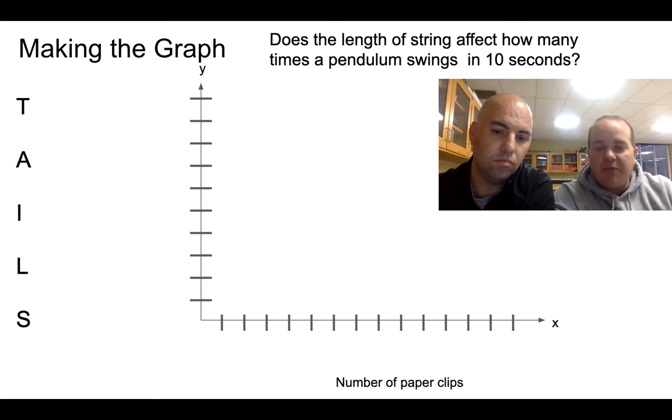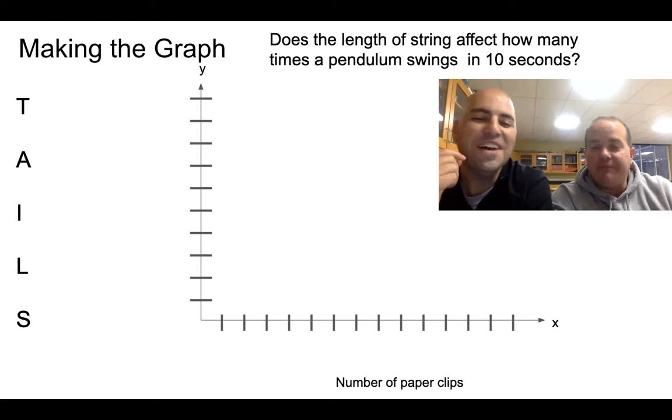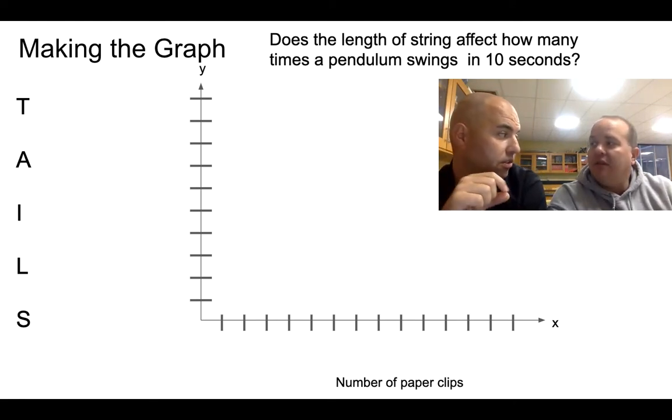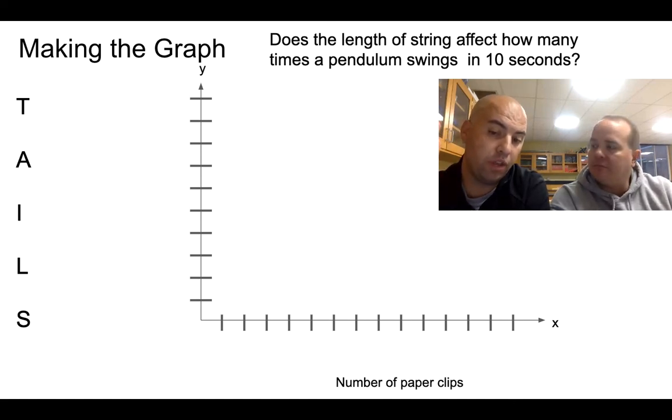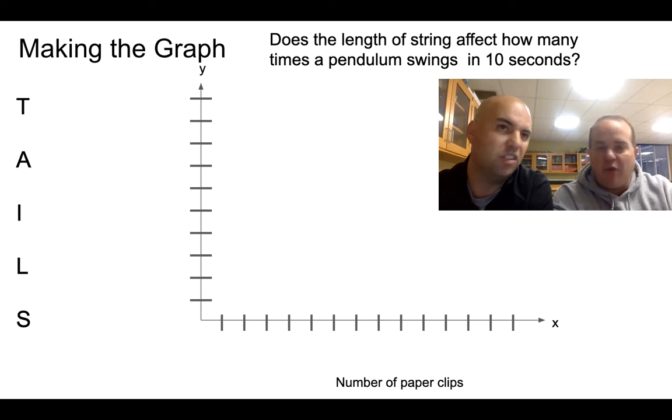You got to find the right amount so that it's easy to read. Next part is L for label. So we're going to label our axes. We have the number of paper clips - that is our independent variable. Looking at the x-axis it's not just paper clips, it's the number of paper clips. So you have the independent variable that's down there but you also have the units that it's being measured with, which I think is really important. Then we have the number of swings.